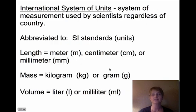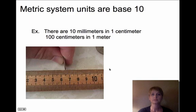What we have in science is this international system of units, and so this is a system that all scientists use no matter what country they're in. We abbreviate it to SI so we don't have to say international system of units all the time. For length we use the meter, generally meter, centimeter, or millimeter. For mass we use kilogram or gram. For volume we use liter or milliliter. And metric system units are in base 10, so it always goes by 10.